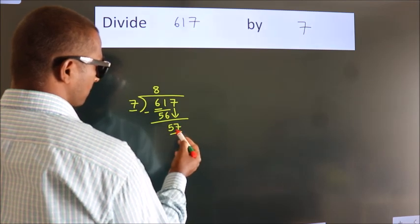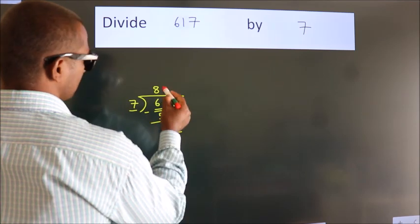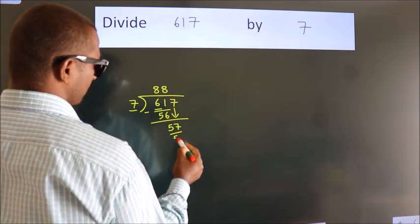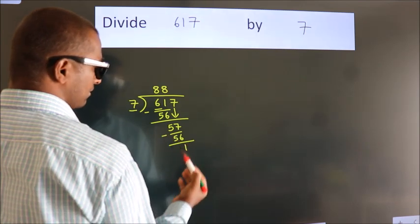So, 57. A number close to 57 in the 7 table is 7×8=56. Now we subtract. We get 1.